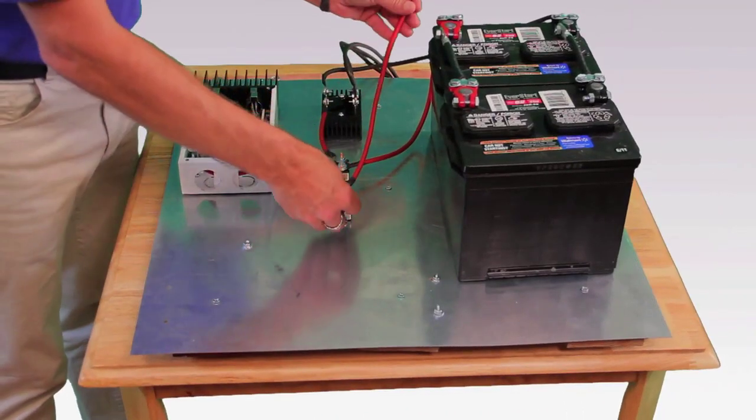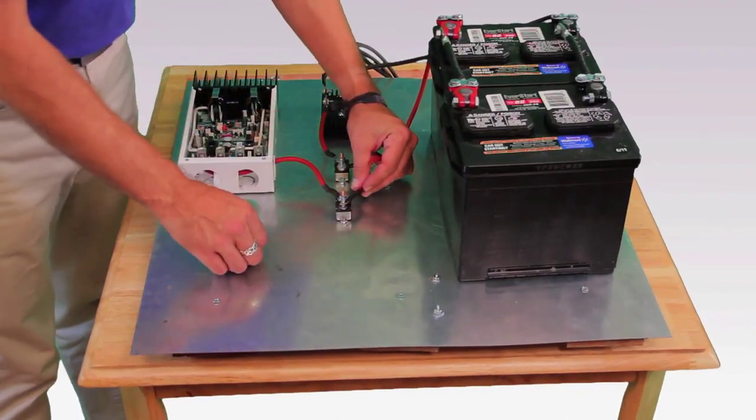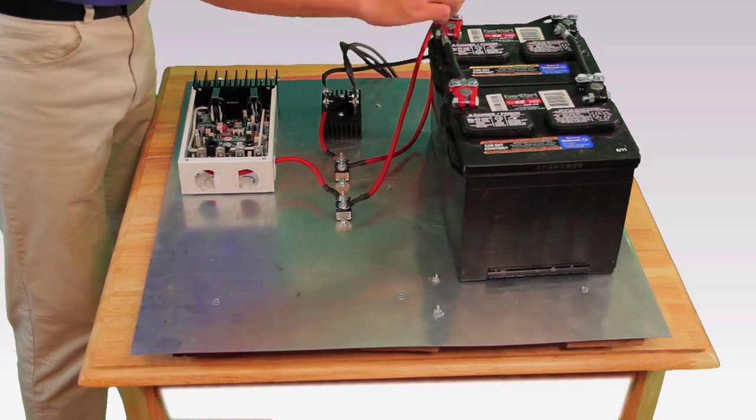Now attach another red wire to the other end of the circuit breaker and run it to the positive terminal on the battery.